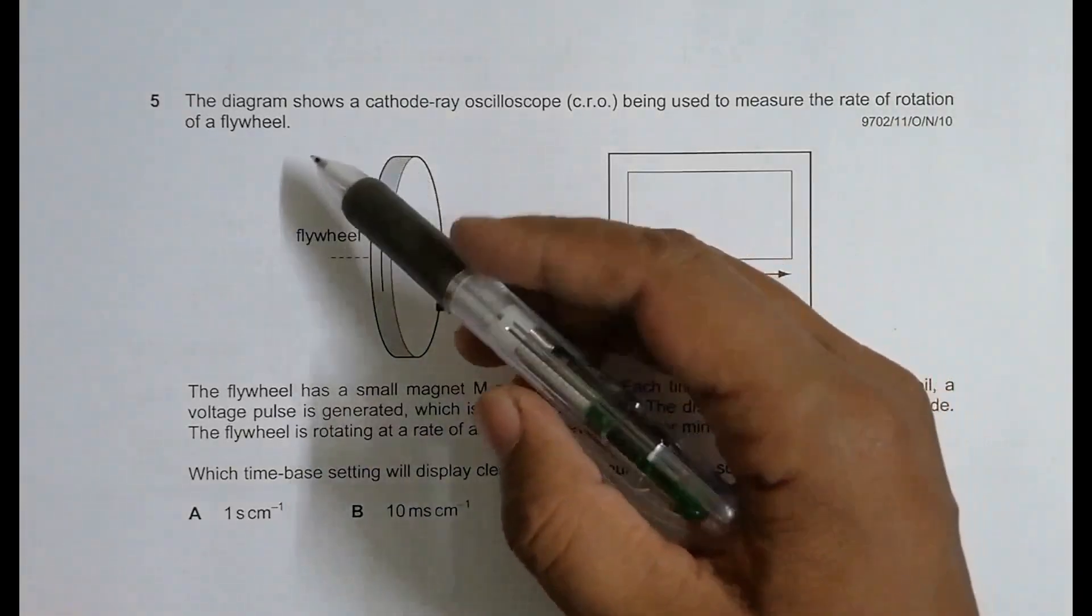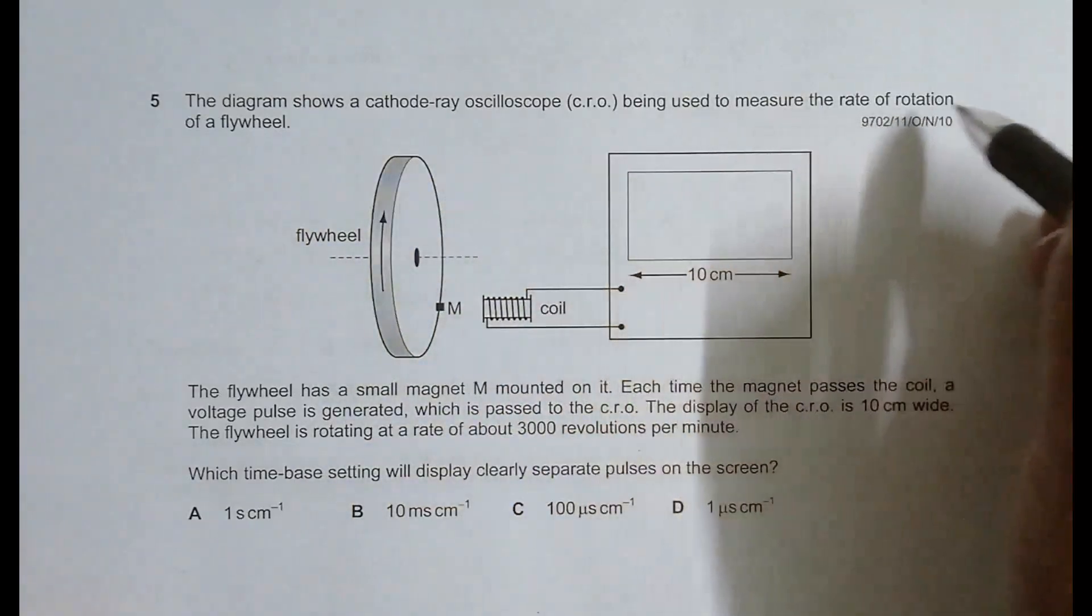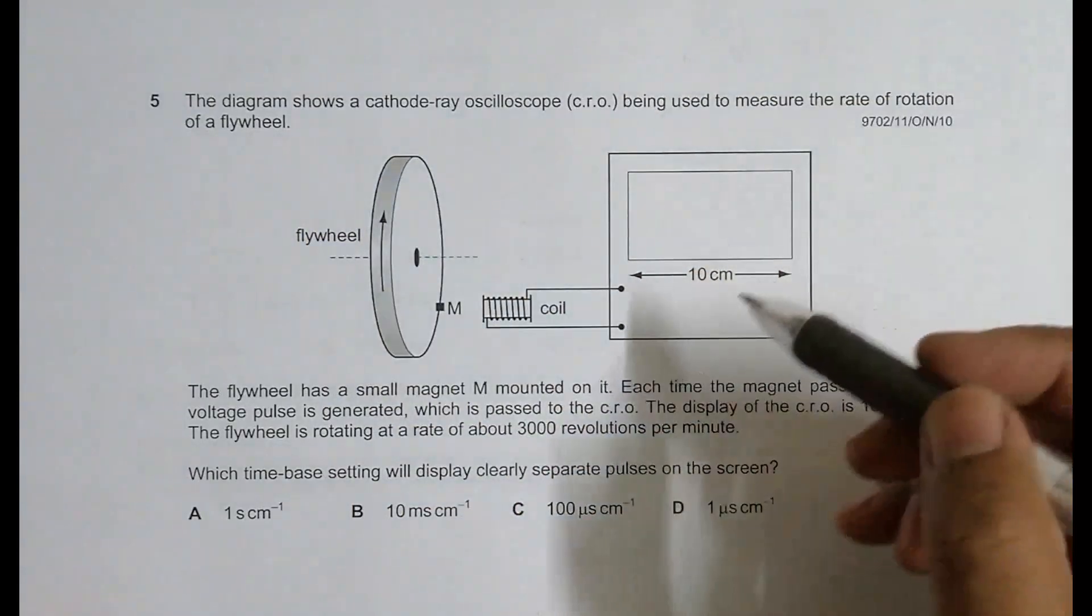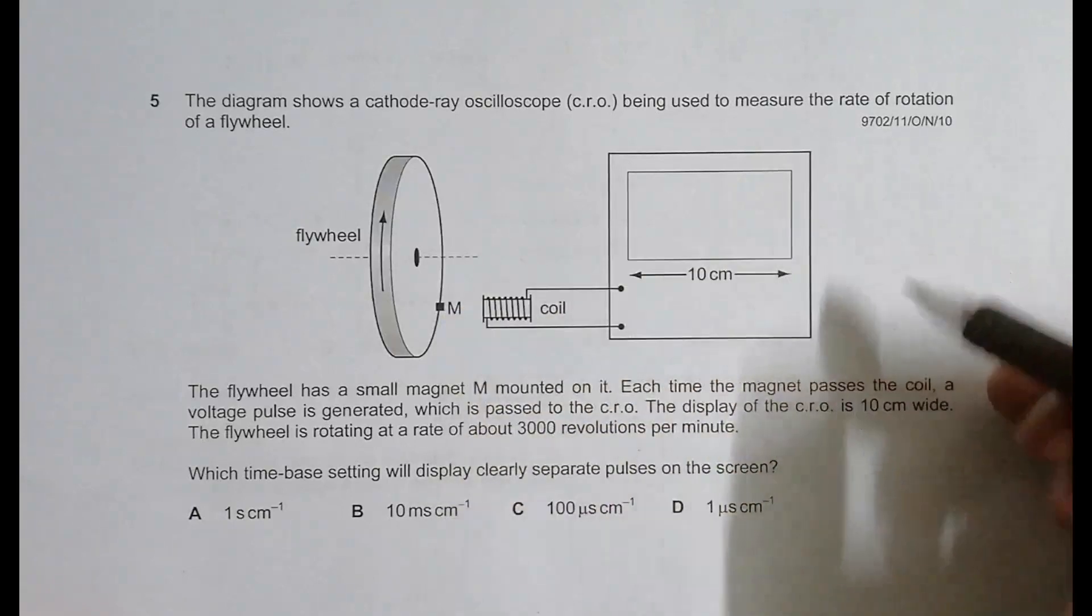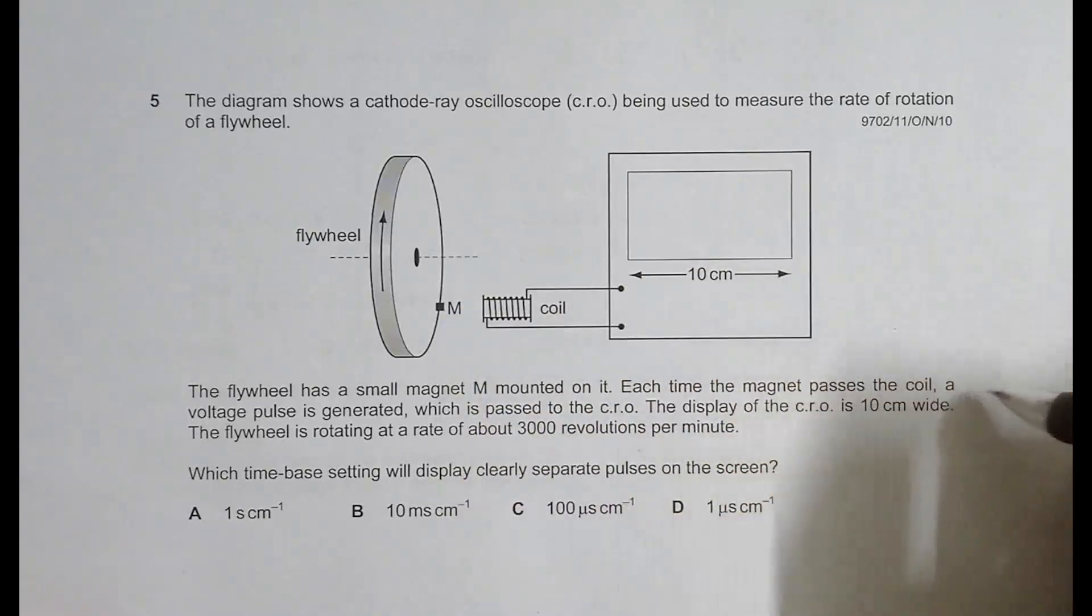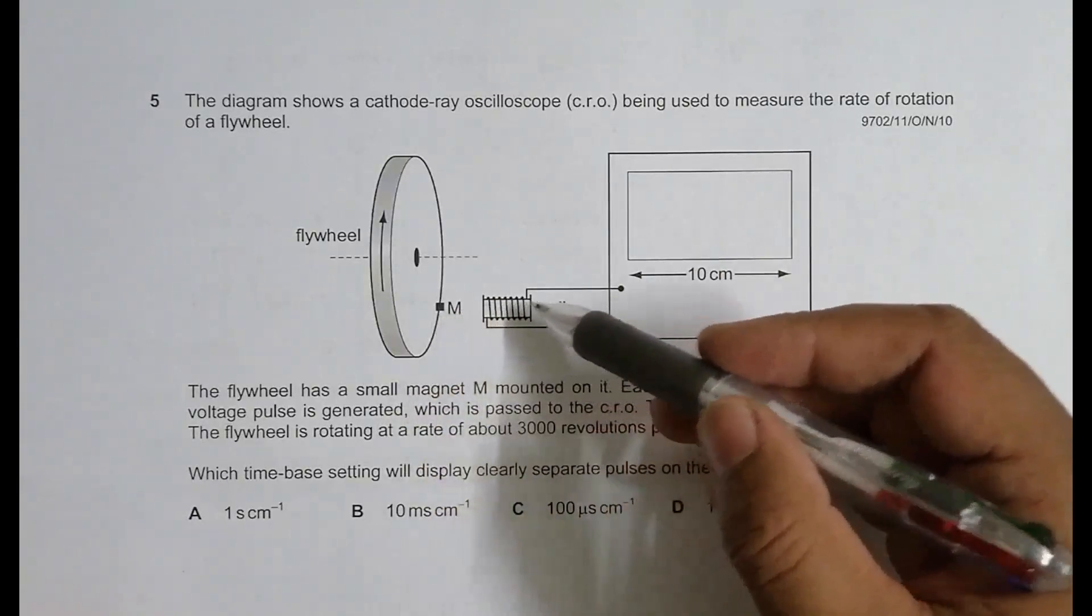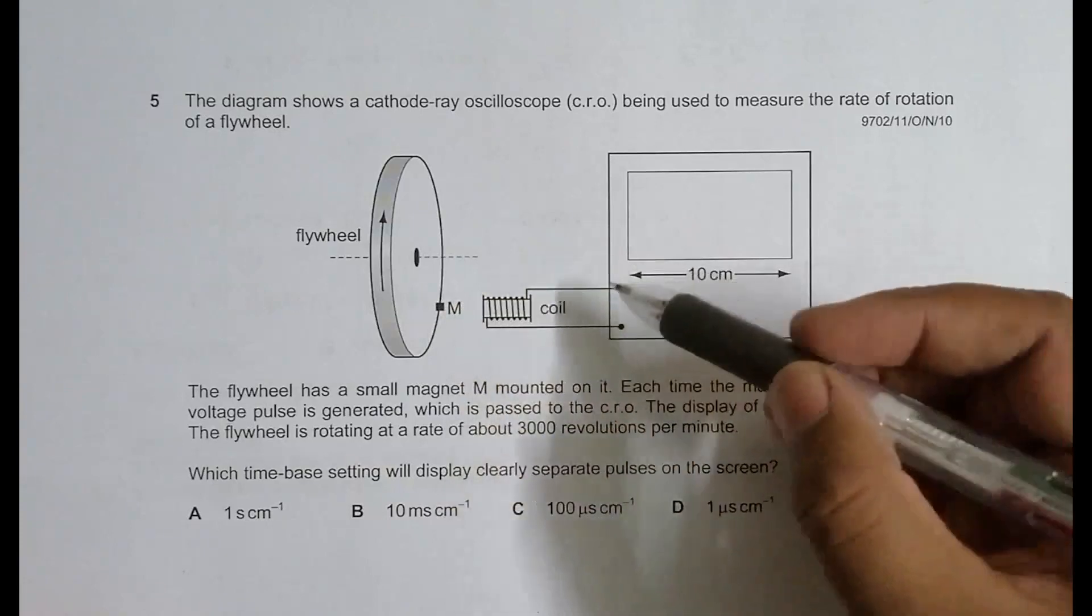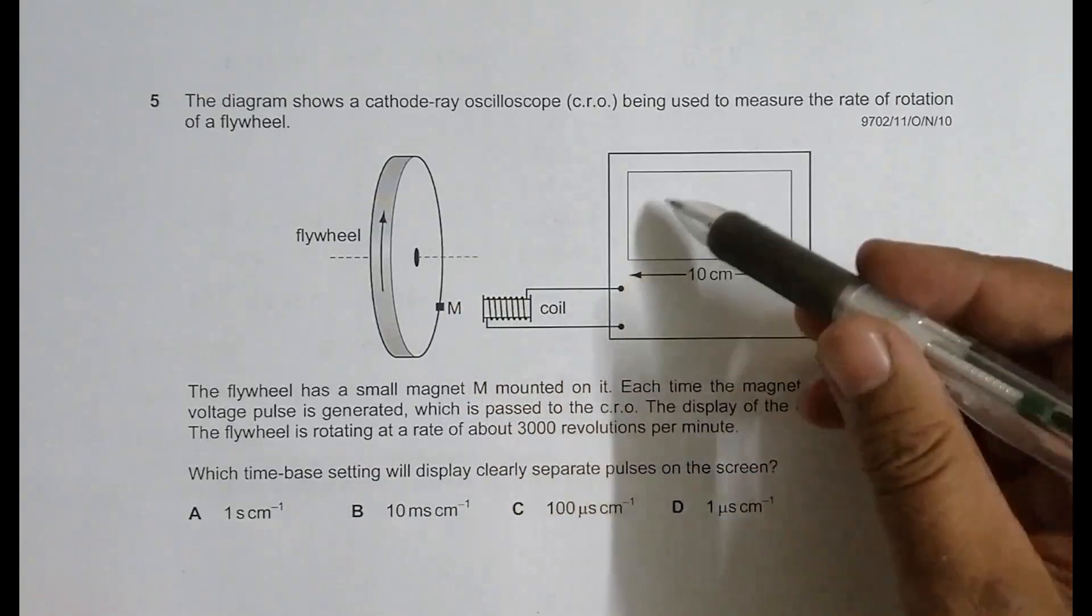Let's read the question. The diagram shows a cathode ray oscilloscope (CRO) being used to measure the rate of rotation of a flywheel. The flywheel has a small magnet M mounted on it. Each time the magnet passes the coil, a voltage pulse is induced because of electromagnetic induction, and the pulse is passed to the CRO.